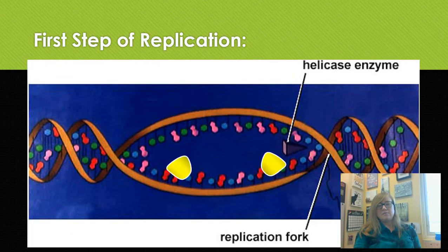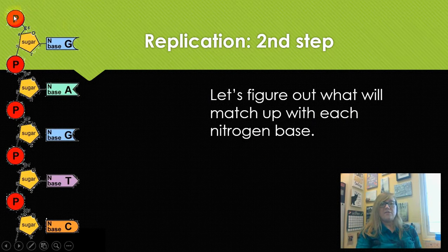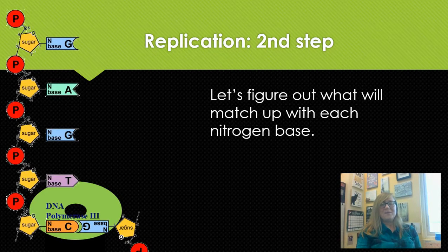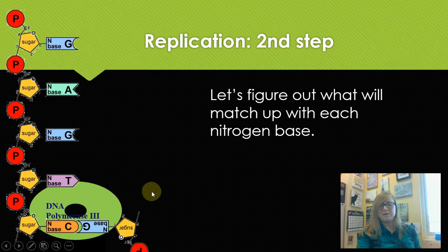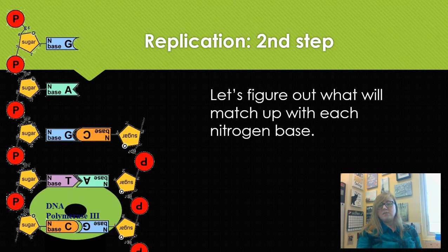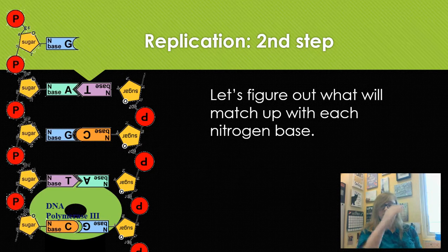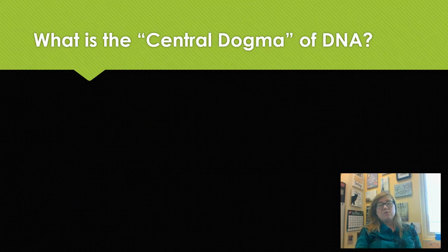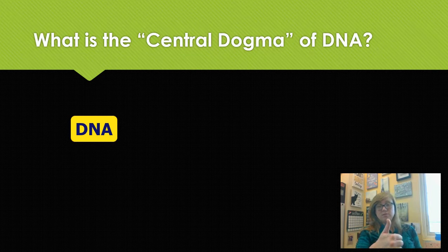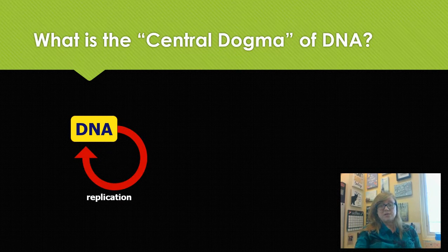So helicase comes in, enzymes add those free bases — DNA polymerase III will add them, and they'll always be matched correctly. We'll always get an exact copy because each base can only match with one other. So this brings us to the central dogma: DNA is there as the code to make living things. It can get copied through replication — DNA gets unzipped and free bases are matched up by an enzyme.